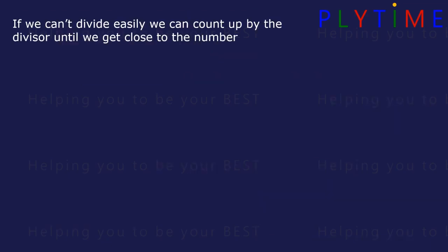If we can't divide easily, we can count up by the divisor until we get close to the number.